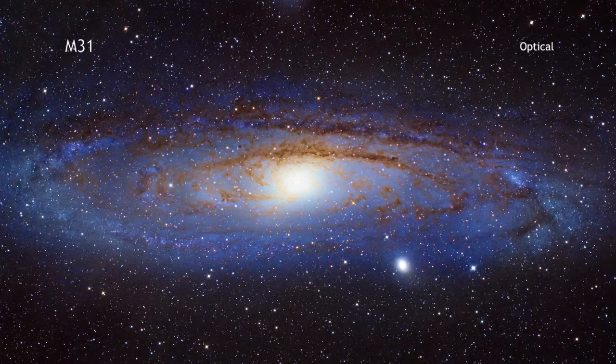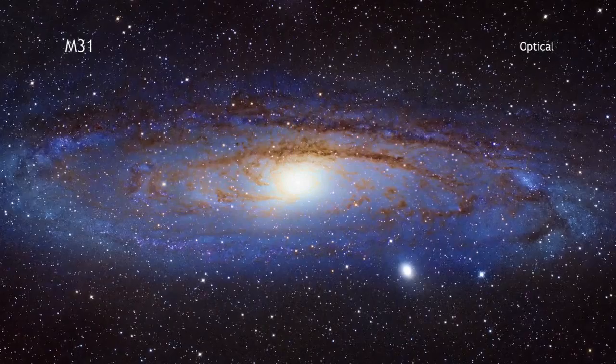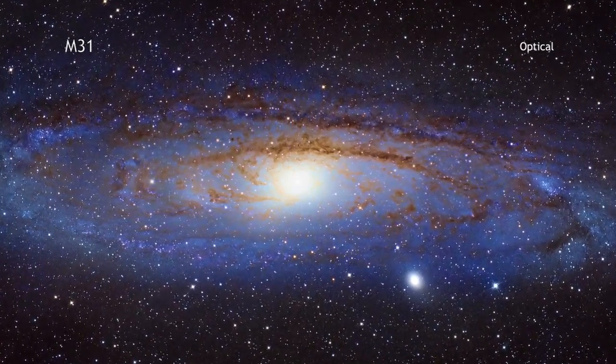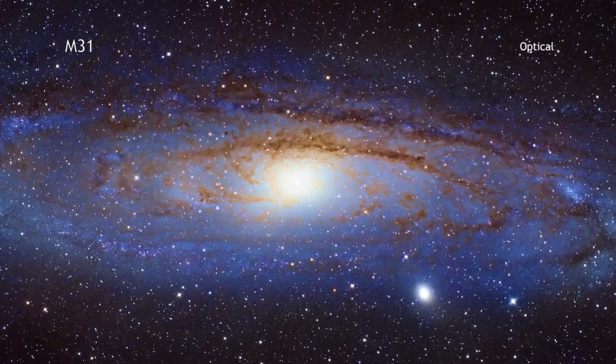Many consider Andromeda, also known as Messier 31, to be a sister galaxy to our own Milky Way. At a distance of only 2.5 million light-years away, Andromeda is relatively close to our galaxy.